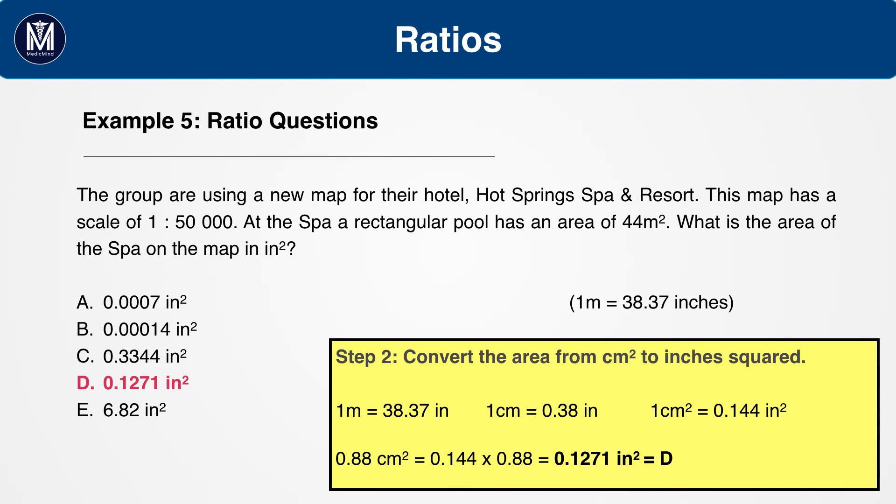Now, convert the 0.88 centimetres squared to get the final answer of 0.1271 inches squared, which is D.